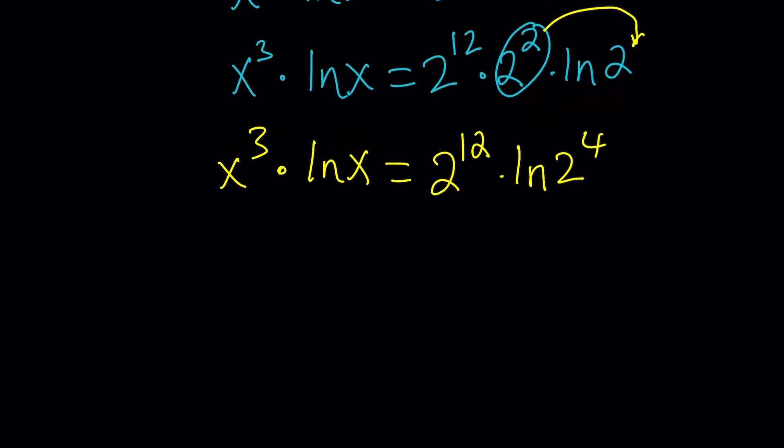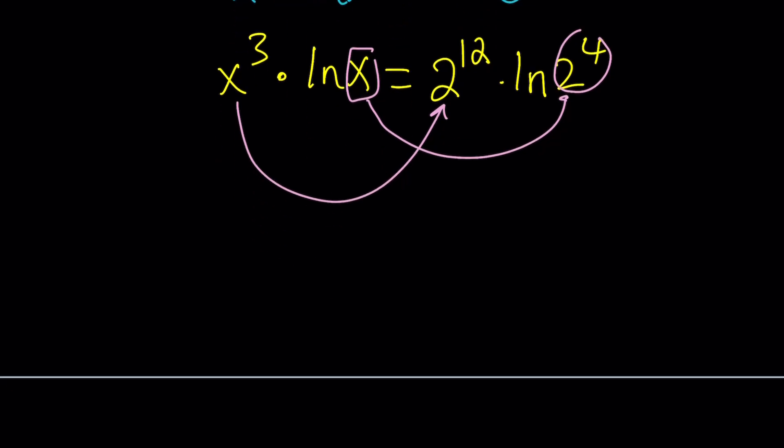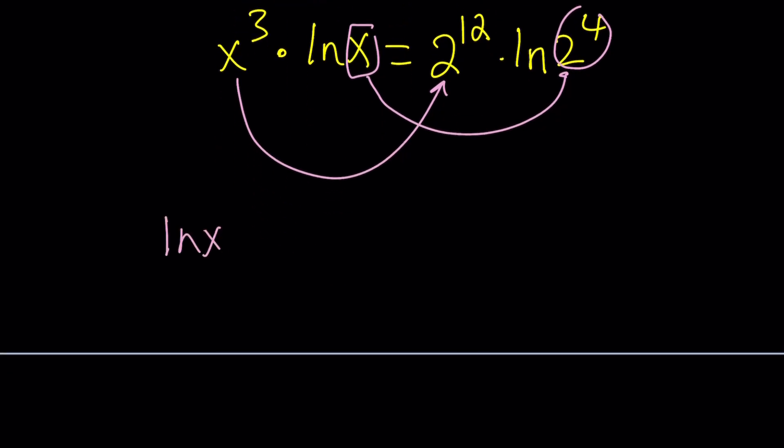Now when you look at this, if x is equal to 2 to the 4th, then x to the 3rd is going to be 2 to the power 12. So this is actually going to work. But again, let's not just rely on this, but use Lambert's W function. Let's go ahead and call ln x something. How about t? This gives us x equals e to the t, and from here x cubed becomes e to the power 3t. So let's go ahead and make the replacements.